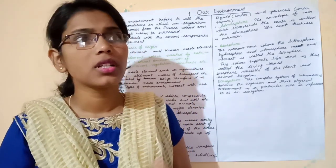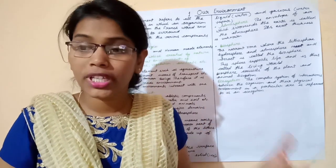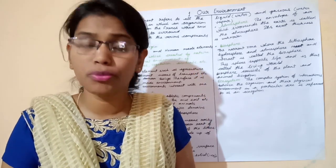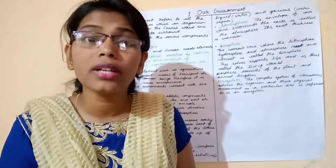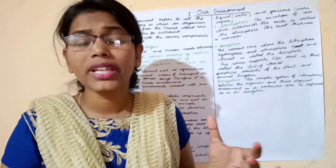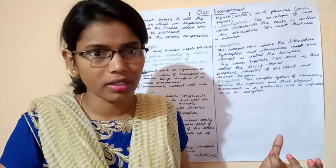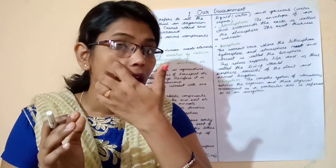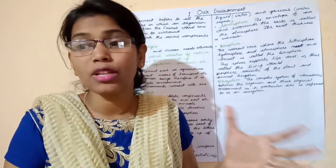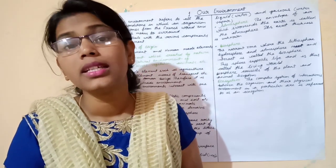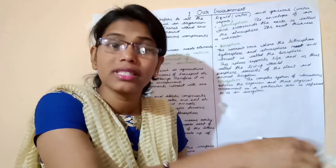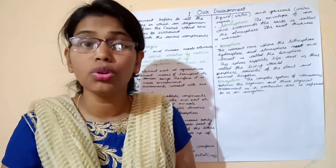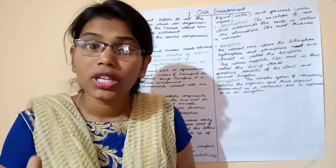For example, we make furniture — chairs and so on — with wood. But from where do we get wood? We get wood from trees and plants. That means human beings use trees and plants and convert them into furniture and chairs. Human beings interact with their natural resources, modify them, and convert them into more valuable things to develop their economic status.